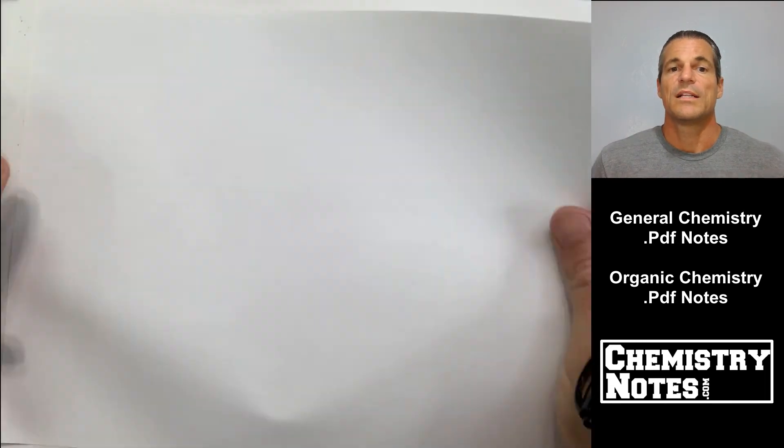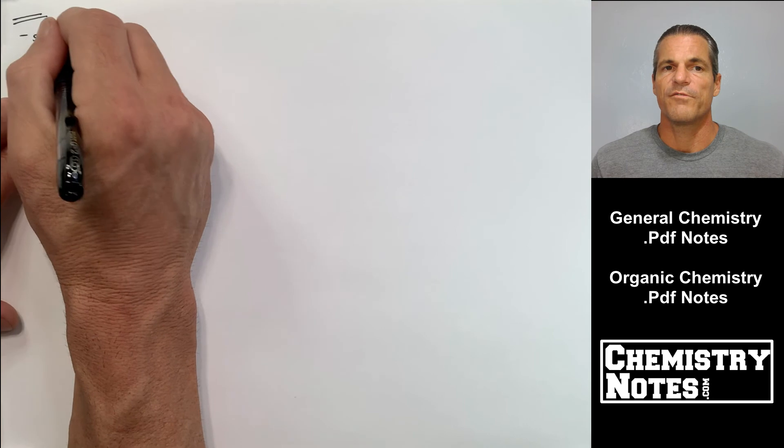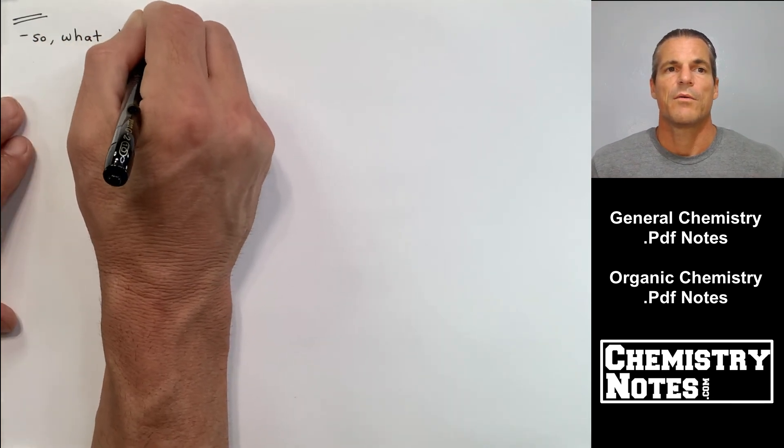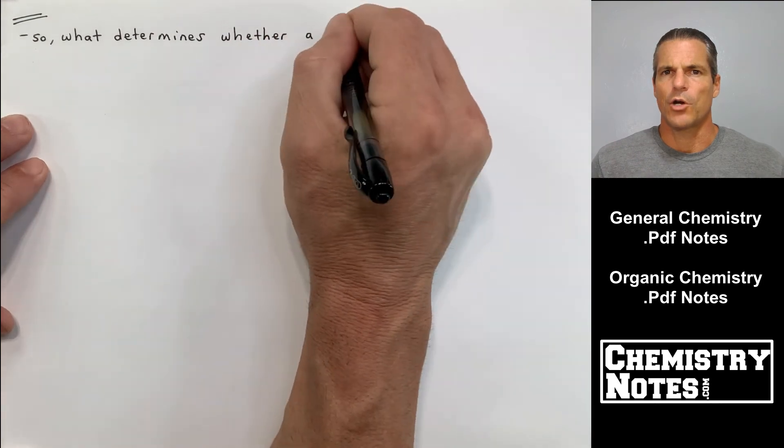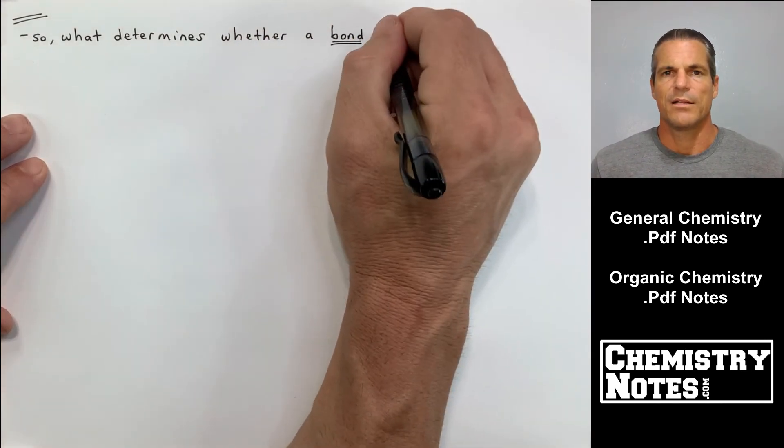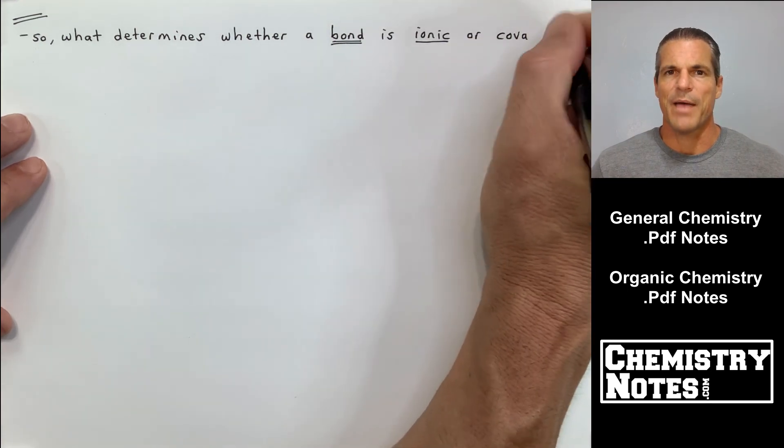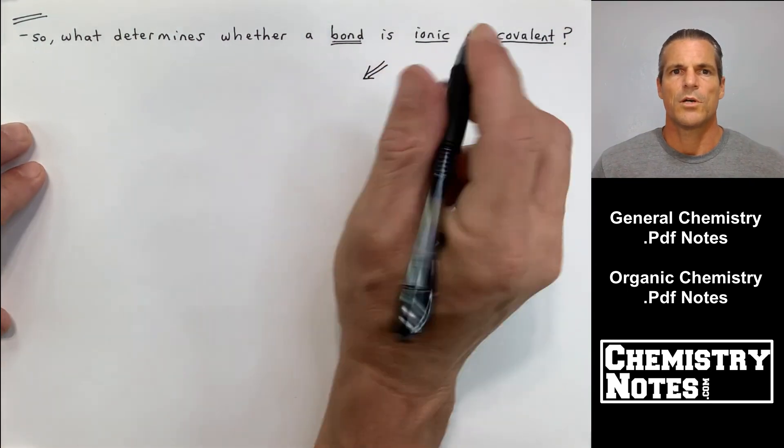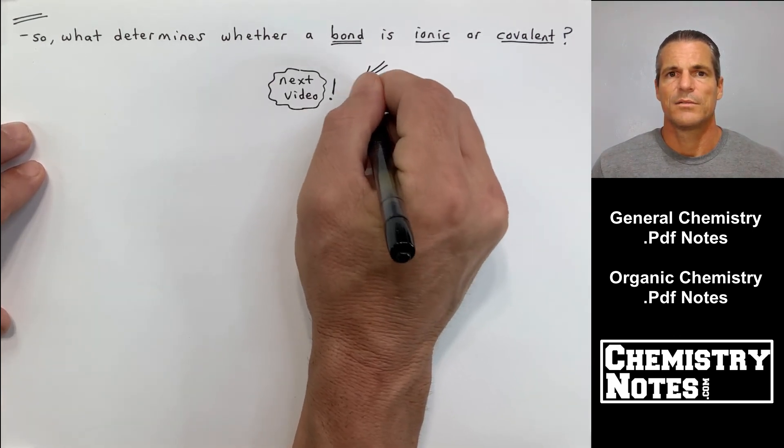Let's move to the last page of today's notes, page 4. We haven't really talked about how to determine if a bond is ionic or covalent. I've just been giving you background information on chemical bonding. So what determines whether a bond is ionic or covalent? We're going to take care of that in the next video.